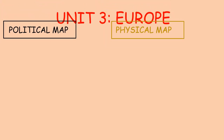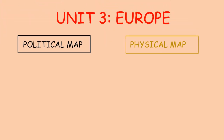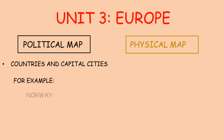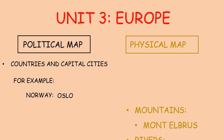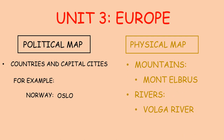In unit number three, we learned about Europe. In the political map of Europe, you can find countries and capital cities. For example, Norway — the capital city is Oslo. And in the physical map, we learned about mountains like Mount Elbrus and rivers like the Volga River.